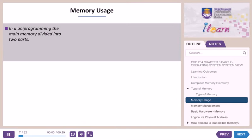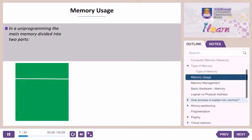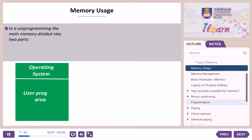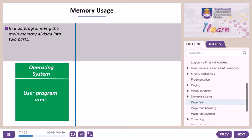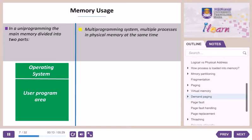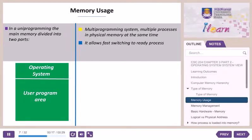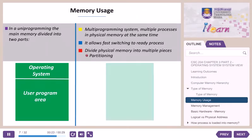In a uni-programming environment, the main memory is divided into two parts: operating system and user program area. In a multi-programming environment, multiple processes or jobs reside in physical memory at the same time. It allows fast switching to ready processes. Physical memory is divided into multiple pieces, known as partitioning.